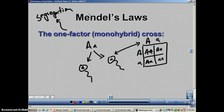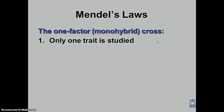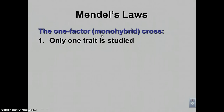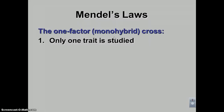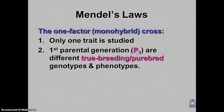The monohybrid, or one-factor cross — the prefix 'mono' means one, and 'hybrid' refers to trait — means you're only looking at one trait. That organism may have a thousand other traits, but you only pay attention to one. When Mendel did his monohybrid crosses, his first set of parents he called the P1 generation, or first parental generation, and they were both true breeding or purebred in genotype and phenotype.